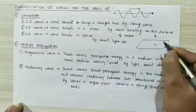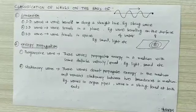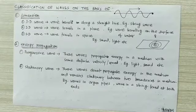What is a three-dimensional wave? A wave that travels in space. Examples are sound wave and light wave, because these waves travel in three dimensions. So sound waves and light waves are examples of three-dimensional waves.